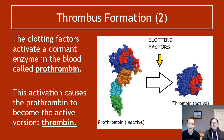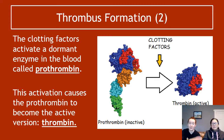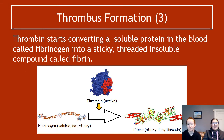The second thing that happens is that these clotting factors will activate a dormant enzyme in the blood called prothrombin. When this is activated, it causes the prothrombin to become the active version, which is called thrombin. So clotting factors basically change prothrombin from this inactive enzyme to thrombin, which is an active enzyme.